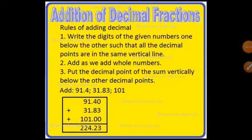Here are a few rules of addition of decimals. The first rule is that write the digits of the given numbers one below the other such that all the decimal points are in the same vertical line. You will have to arrange them in that way so that all the decimal points come in the same alignment. Next, add as we add whole numbers — the method of addition is going to remain the same as the addition of whole numbers.